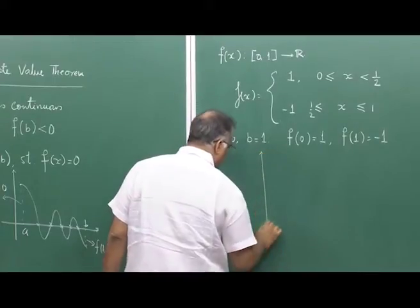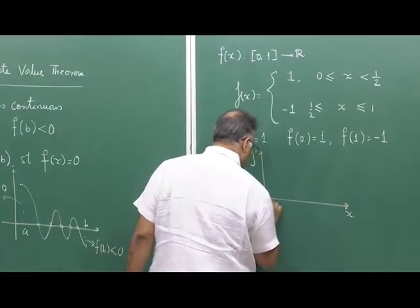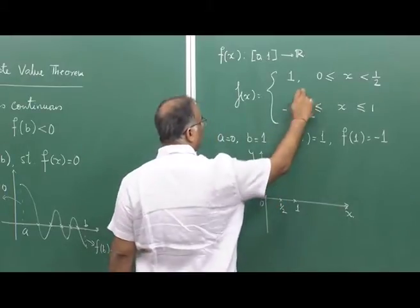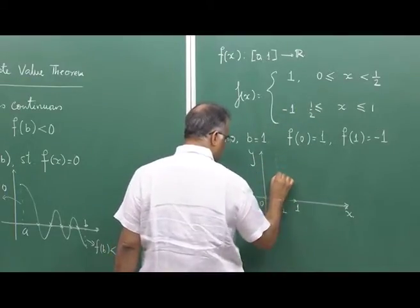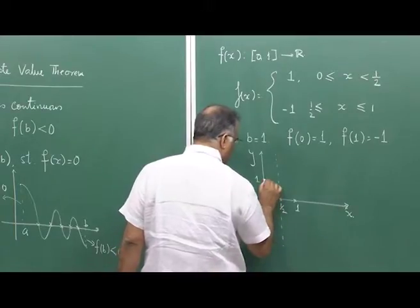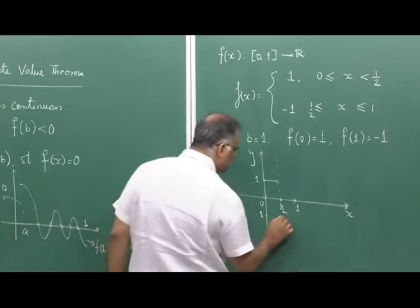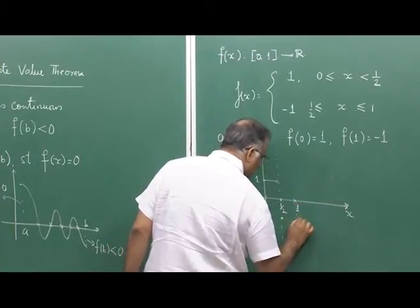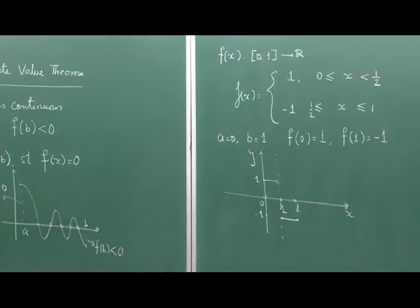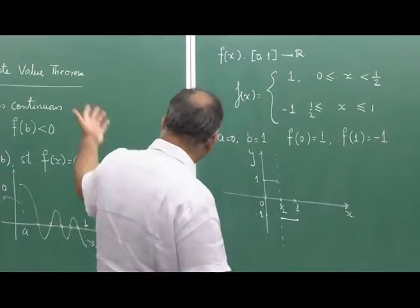Why has the function not attained 0? If we draw the diagram: on the line 0 to 1, up to the point 1/2 the value is 1 — this is the demarcating point. At exactly 1/2 it takes the value −1 and not 1. So you see immediately that there is a gap — this is a discontinuous function, and for a discontinuous function the intermediate value theorem need not hold true.